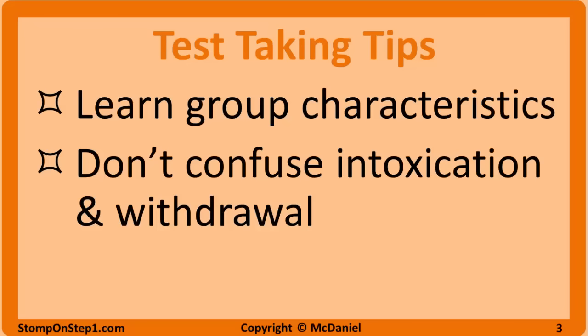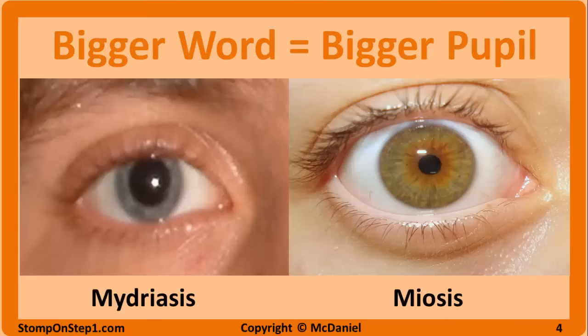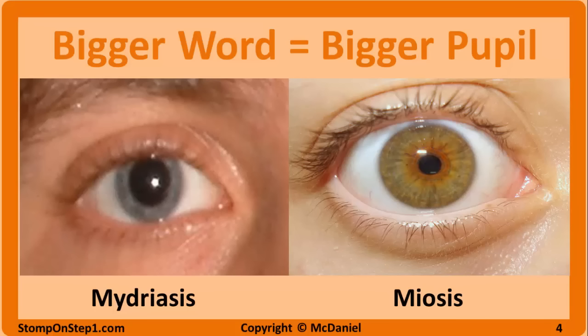For example, the question stem may fit stimulant intoxication and depressant withdrawal, but the last sentence of the question specifically asks about withdrawal. Keep in mind, the most important thing for Step 1 questions are the changes to the vitals and pupils — these should be the buzzwords you are looking for. You will almost always be given this information in these types of questions, and if you have just this info, you can usually narrow it down to at least two options. Also make sure you don't get mydriasis and miosis confused: mydriasis is the bigger word and has the bigger pupils, miosis is the smaller word and has the smaller pupils. The best way to confirm a diagnosis of drug use is a urine drug screen, and mental health services are important in the treatment of addiction, but those are too easy so you won't see either as an answer on the exam.